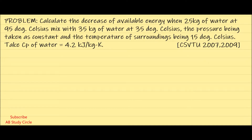The problem says: calculate the decrease of available energy when 25 kg of water at 95°C mixes with 35 kg of water at 35°C. During the mixing, the pressure remains constant and the surrounding temperature is 15°C. The specific heat of water at constant pressure, Cp, is given as 4.2 kJ/kg·K.